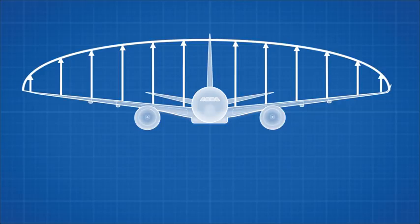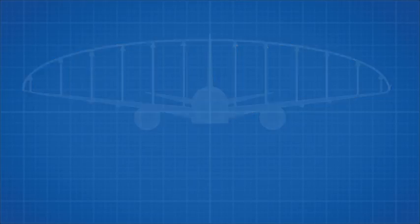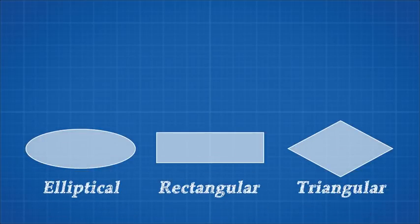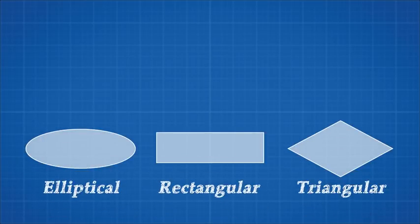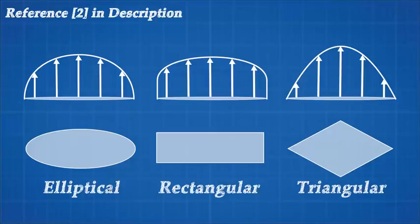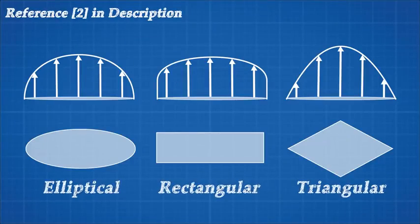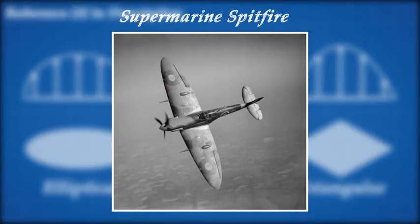Let's compare some wing shapes and their lift distributions to see how this works. Here are three wing shapes — an elliptical, rectangular, and triangular wing — and their lift distributions look like this. As you can see, the elliptical wing also has an elliptical lift distribution, and this is the ideal. The iconic Spitfire was one of the few mass produced planes in history to have this shape.